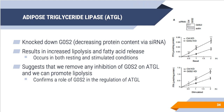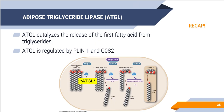To recap: ATGL catalyzes the release of the first free fatty acid from triglyceride, forming diacylglycerol. ATGL is regulated by perilipin-1 and its interaction with CGI-58, which is the activator of ATGL, as well as G0S2, which is an inhibitor of ATGL.